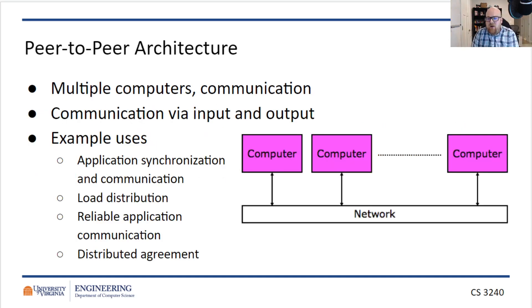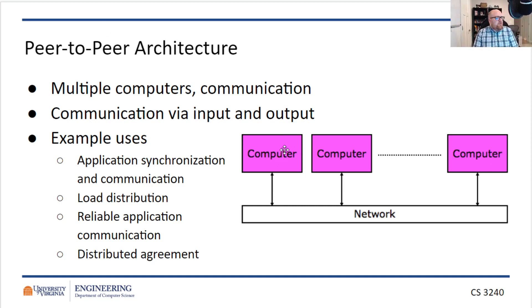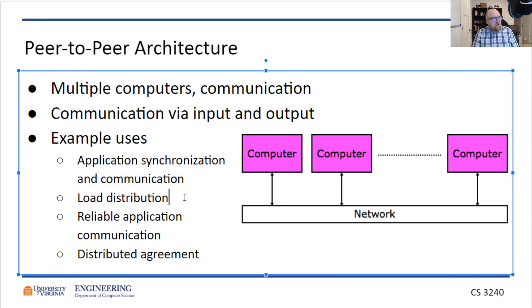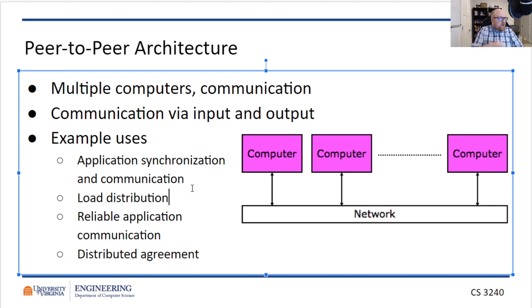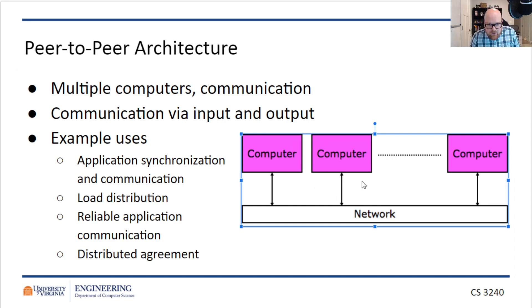An example would be a peer-to-peer architecture. The idea of a peer-to-peer architecture is you have multiple computers communicating with each other over some shared network — often the internet as a whole. You communicate to other systems via input and output. This allows you to synchronize different applications and distribute the load of the system. So if you have a system where you need a lot of individual systems interacting together and want to distribute some work, you may use a peer-to-peer architecture.